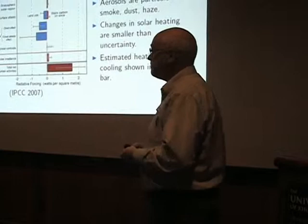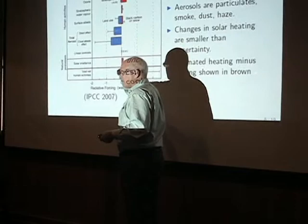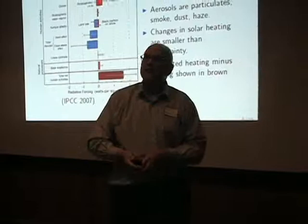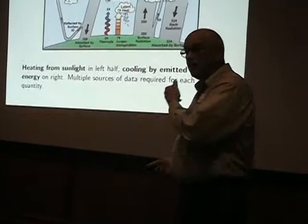Sometimes you hear people say climate change is caused by solar cycles. These are the best estimates of the forcing of changes in the environment because of solar cycles during the last 150 years. It's a tiny amount and it's smaller than the uncertainty. So if you add all these effects up — the heating, take away the cooling — we have a positive effect. We've had warming over the last 150 years.